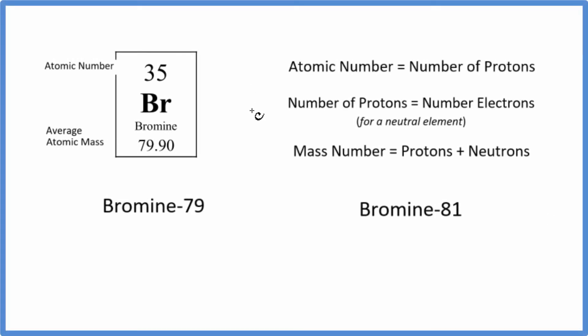In this video, we'll write the isotope notation, also called nuclear notation, for the isotopes of bromine. For bromine, there are two major isotopes: bromine-79 and bromine-81.